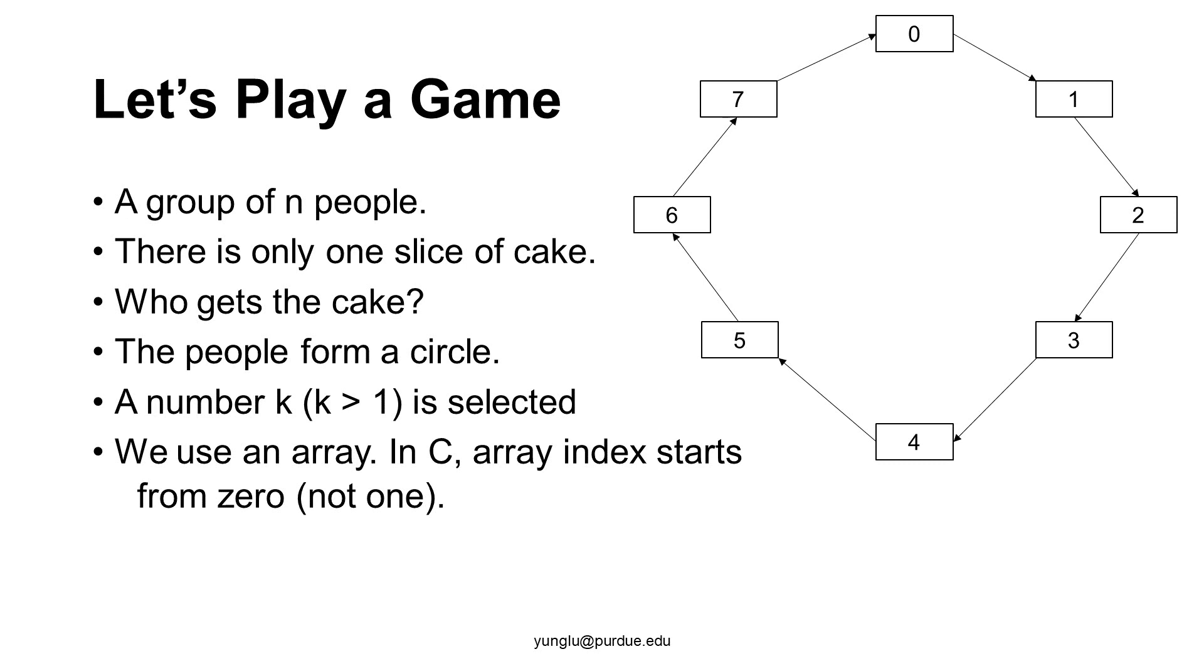In this example, there are 8 people, marked as 0, 1, 2, 3, to 7. We start from 0 because the index of an array in C starts from 0.